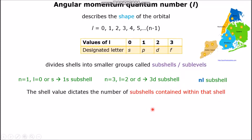It determines how many and which sub-shells are contained within an electron shell. For example, in the first electron shell, N equals 1, only one sub-shell can be contained, that is the S sub-shell.